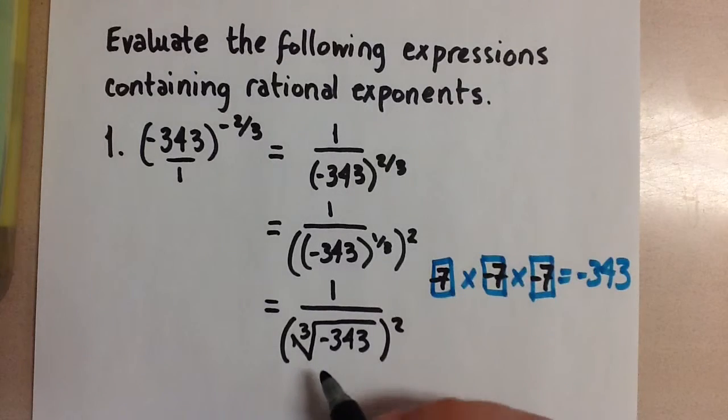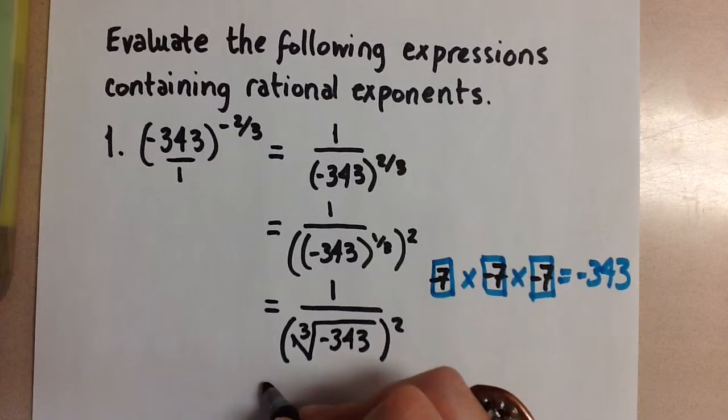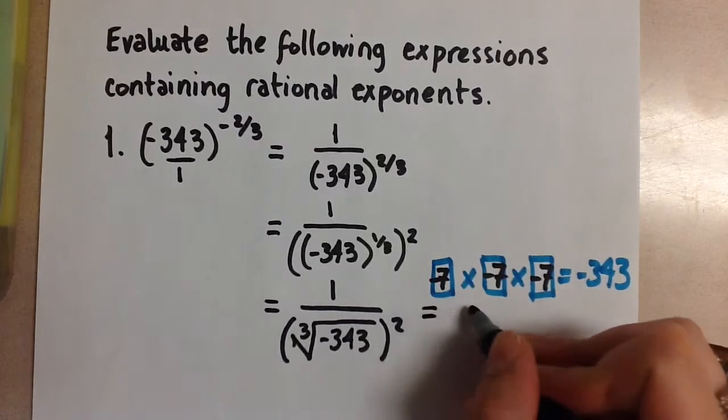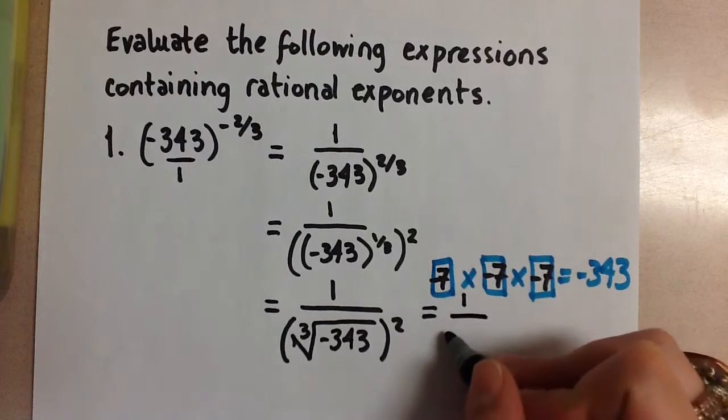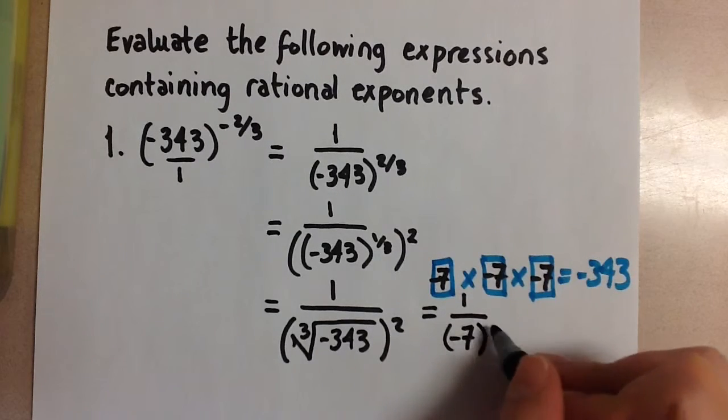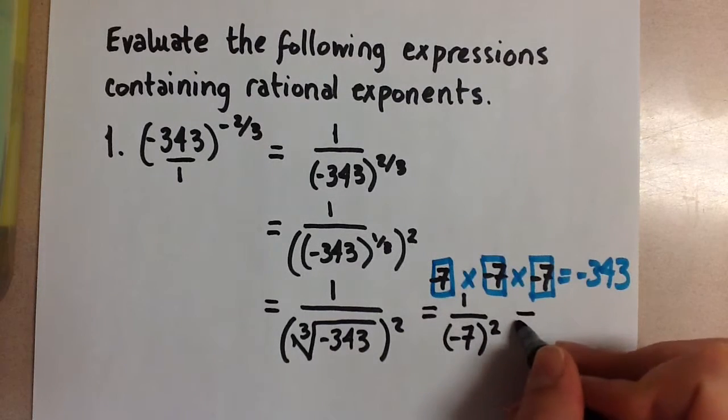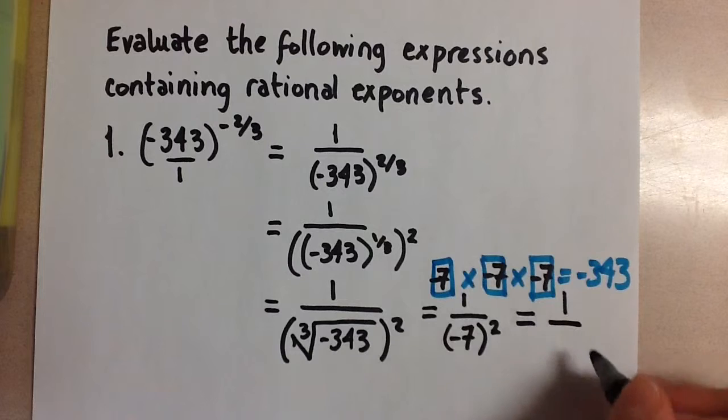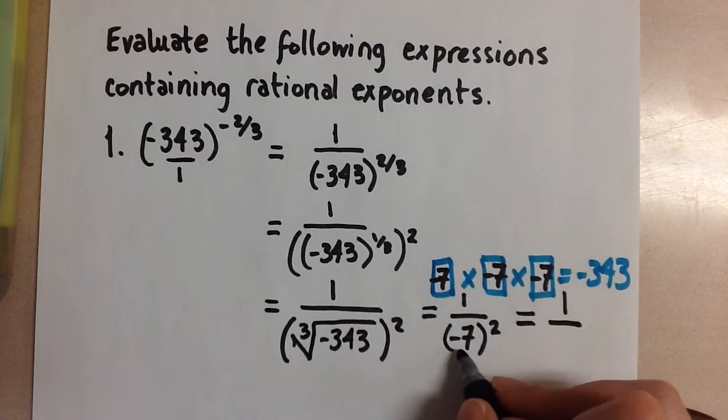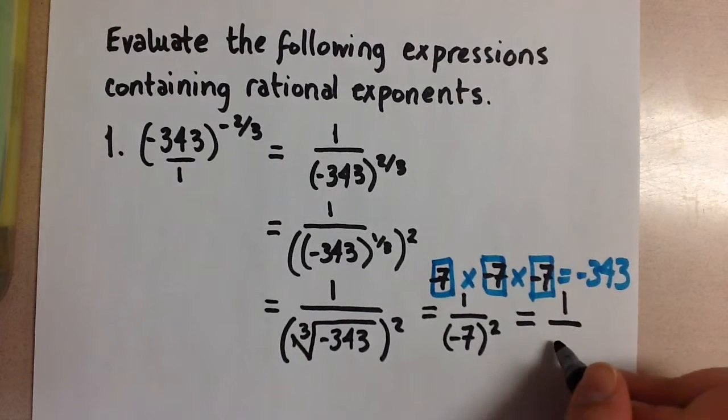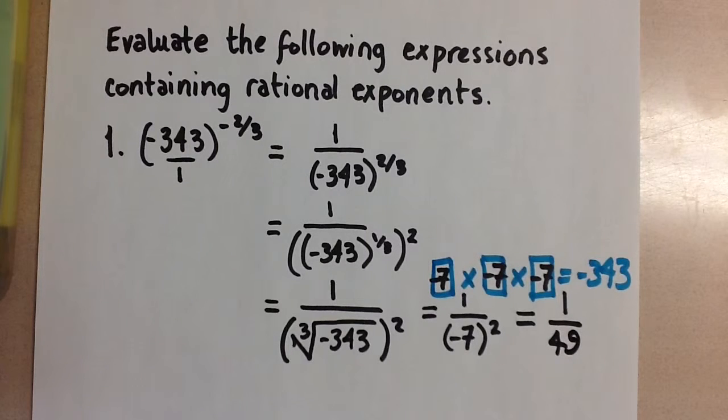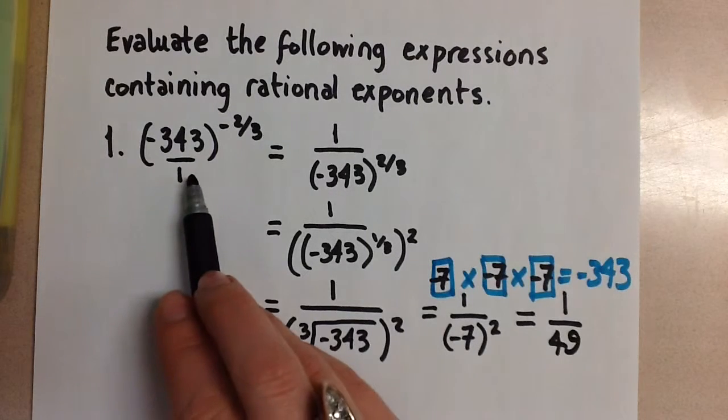When we evaluate this, we're going to get 1 over negative 7, and we still have to square it. So in the end, this expression will be negative 7 squared, which is positive 49. So we have 1 over 49 for this original expression.